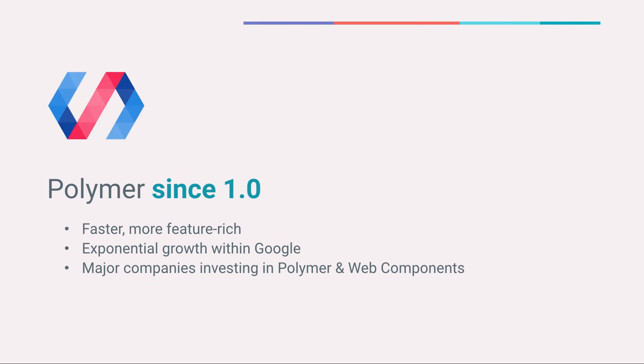So in short, since 1.0, Polymer has become faster and more feature-rich. It's seeing exponential growth within Google, served to over a billion users, and major companies are investing in Polymer and web components.